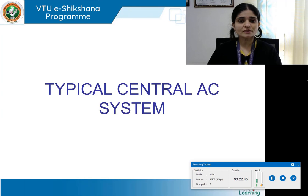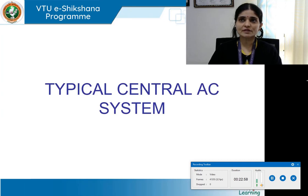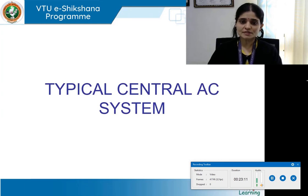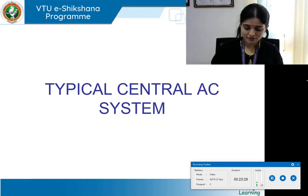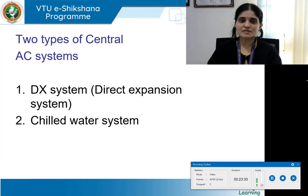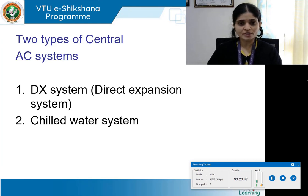We have now understood the basics of central AC in terms of zoning — single zone, multiple zone — and various systems: variable air volume, constant air volume, all-water, all-air, and air-water. We will now proceed to understand the design of a typical central air conditioning system. Two types are available: the direct expansion system (DX system) and the chilled water system.